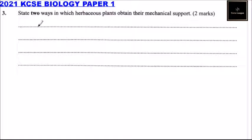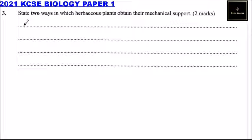Question number three: state two ways in which herbaceous plants obtain their mechanical support. Herbaceous plants are those plants that don't have a woody stem, so they don't have a strong stem.